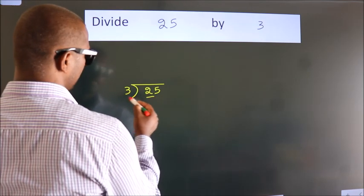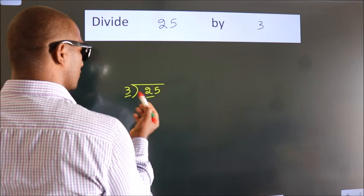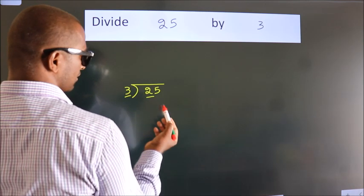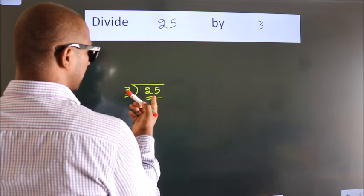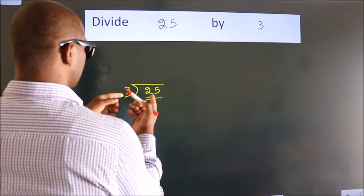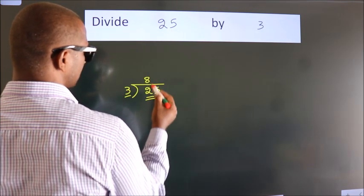Here we have 2. Here 3. 2 smaller than 3. So we should take 2 numbers. 25. A number close to 25 in 3 table is 3 8s 24.